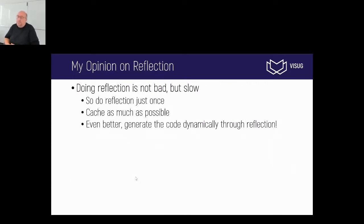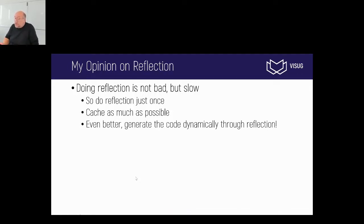Reflection is not bad, but it's slow. So how can I use reflection efficiently by doing it just once? You want to walk over your code using reflection, cache as much knowledge as possible in some data structure, and then use that data structure. Or even better, you could use reflection to generate code on the fly. After doing the reflection once, you just call your method and get native performance. The JIT compiler generates native code and it runs at native code speed. That's the technique I want to show you.